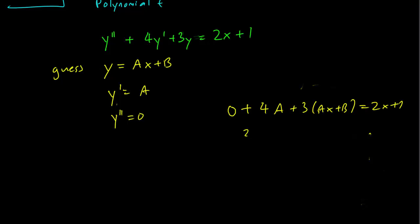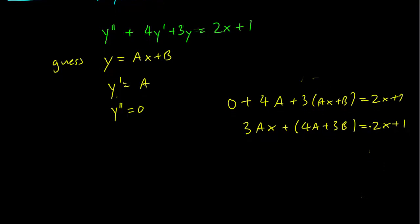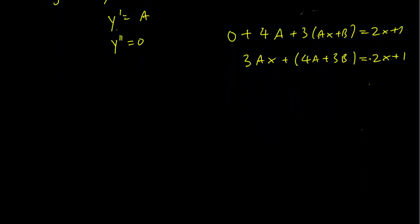Collecting terms, this means that 3ax plus 4a plus 3b is going to be equal to 2x plus 1. So we want to compare the terms that have x's and the terms that don't — this gives us two equations: 3a equals 2, and 4a plus 3b equals 1.